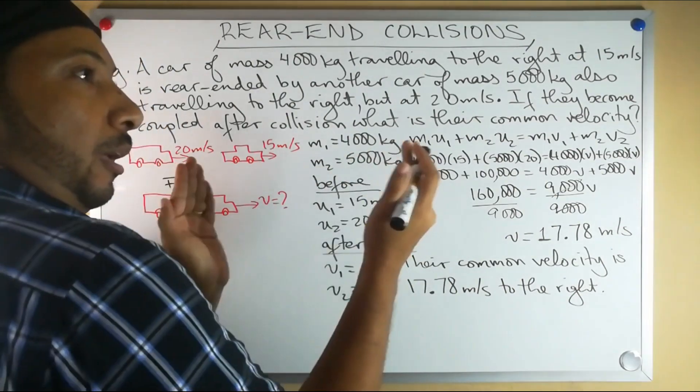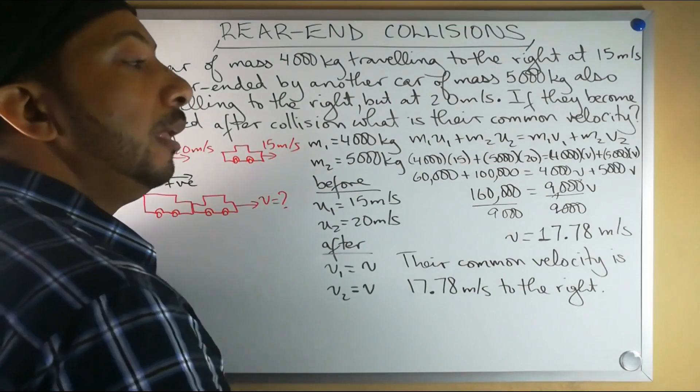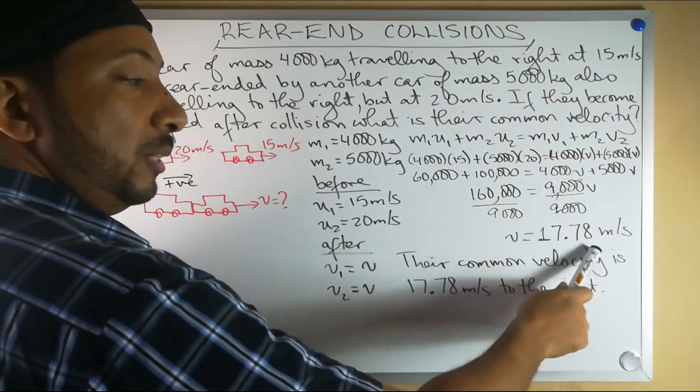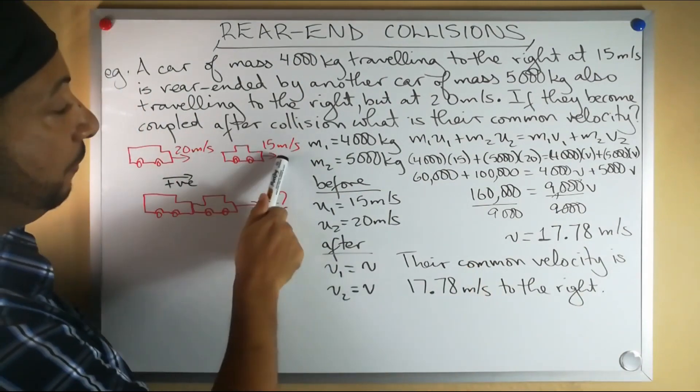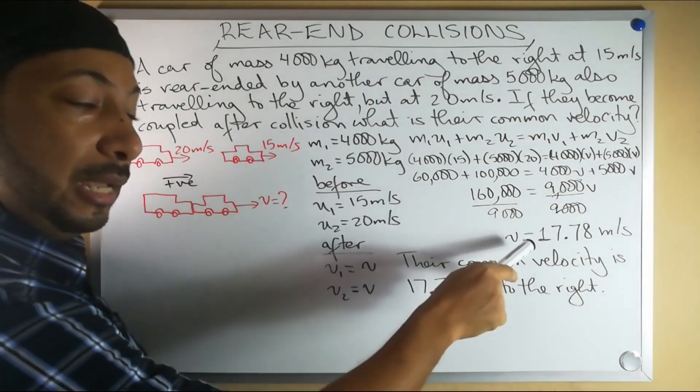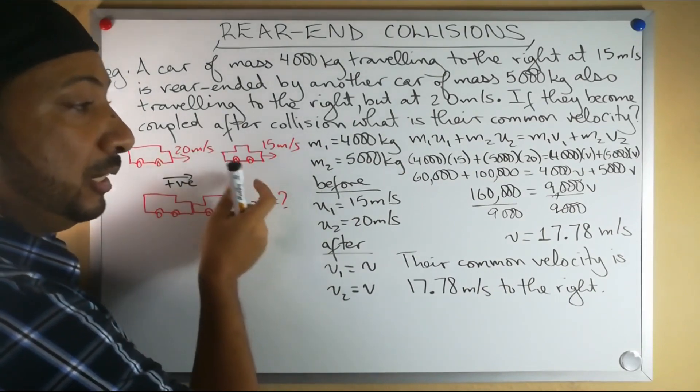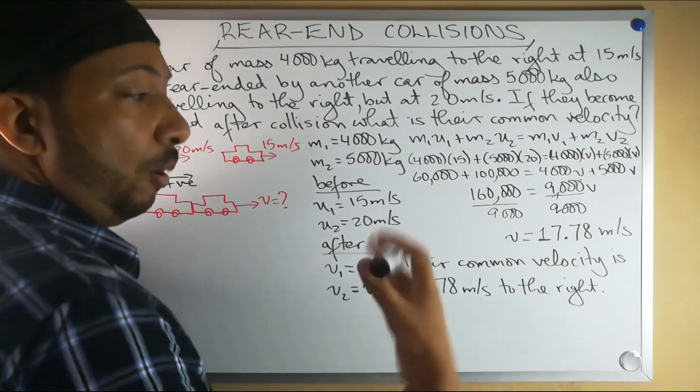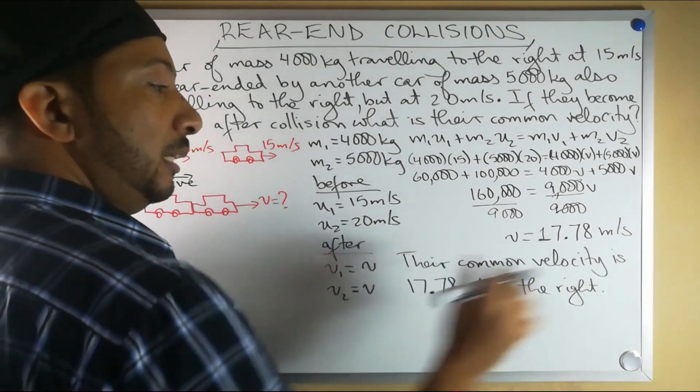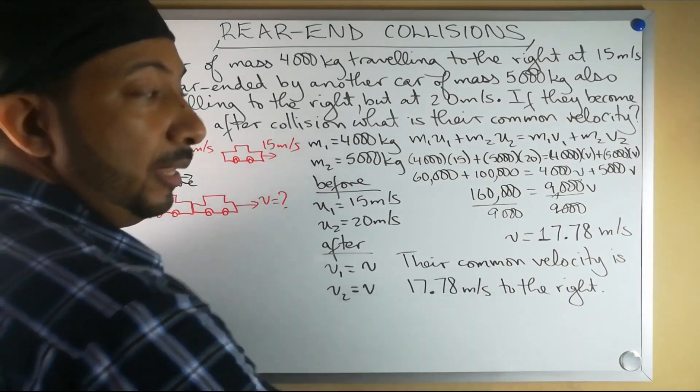No time will you observe a rear-end collision and then start moving backwards. So positive 17.78. This 17.78, as we noted before, is greater than 15 but less than 20. So if you got anything less than 15 or anything more than 20, anything out of this range, that is also another red flag that you did something wrong. So our final answer is that their common velocity is 17.78 meters per second to the right.